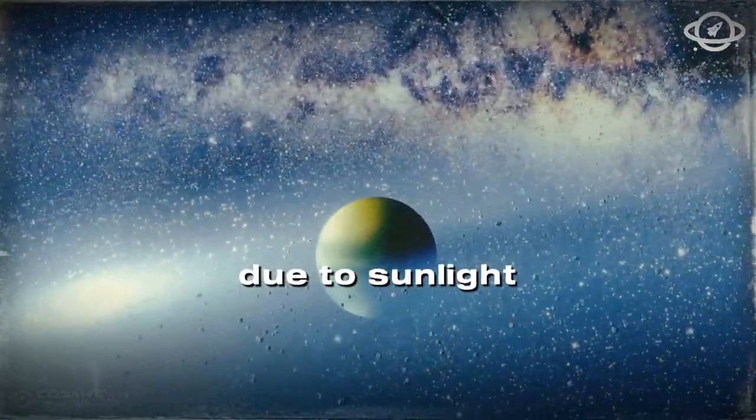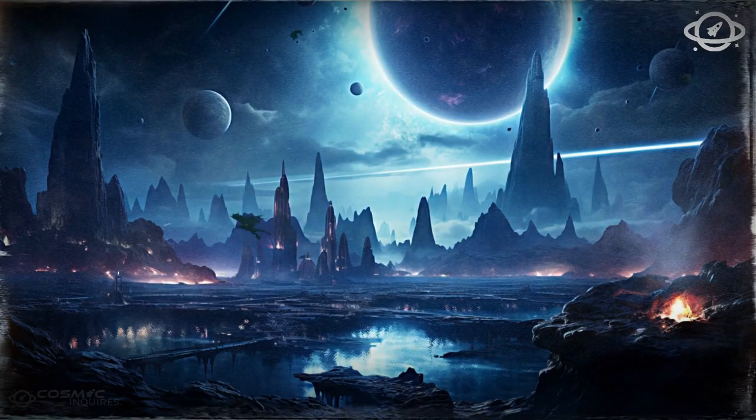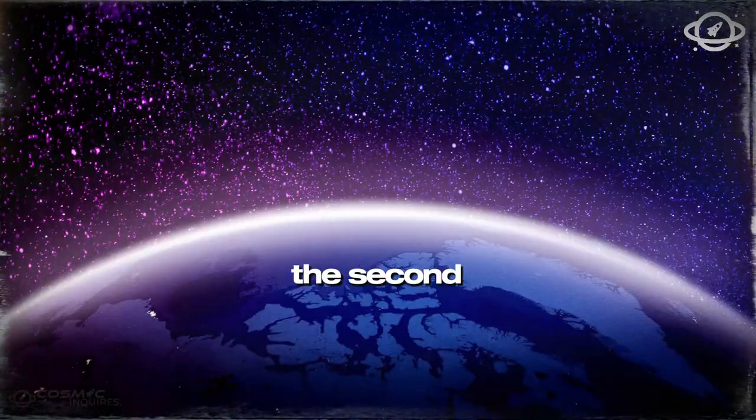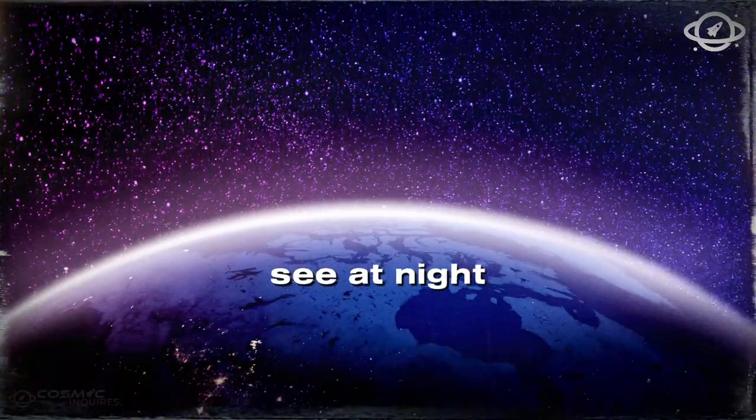Still, it's visible due to sunlight refracting through its atmosphere. Venus is actually brightest when it's a crescent shape in the sky, making it the second brightest object we see at night after the Moon.